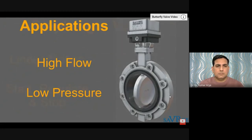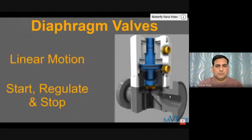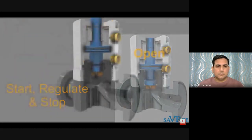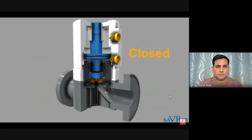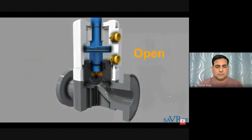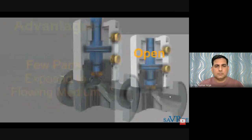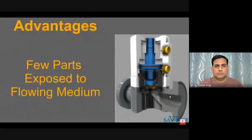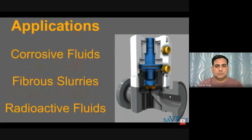A diaphragm valve is a linear motion valve used to start, regulate, or stop fluid flow. A flexible diaphragm can be raised or lowered onto the valve seat to open or close the valve. A great advantage is that very few parts are exposed to the flowing medium — only the flexible diaphragm and internal flow passages are exposed. This makes it particularly well suited for handling corrosive fluids, fibrous slurries, radioactive fluids, or fluids that must remain free from contamination.